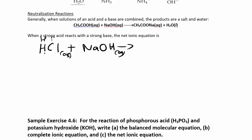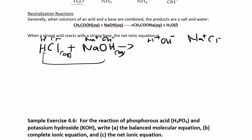So we have H+ and Cl−, and Na+ and OH−. On the product side, I have my cations H+ and Na+, and I switch my anions. So H now pairs with OH− and Na pairs with Cl−. I can crisscross: HOH is the same as water, H2O, and NaCl.